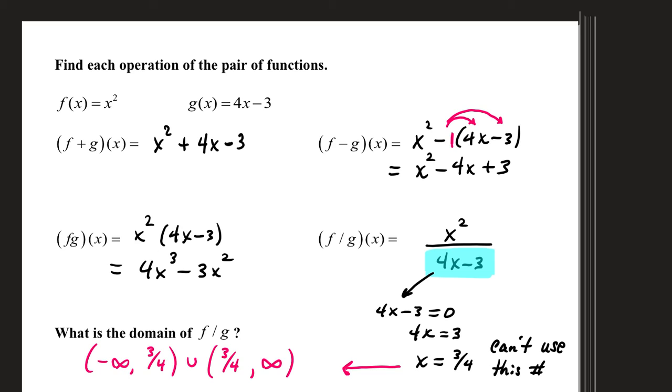The domain part of it, you set your denominator equal to 0. Solve for x, add 3, divide by 4, x equals 3 fourths. So remember, we can't use that number, but we can use all the others. All numbers leading up to 3 fourths, all numbers leading away from 3 fourths on a number line.